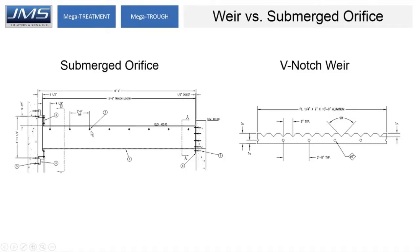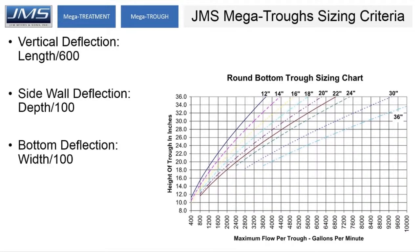Submerged orifices or V-notch weirs are typically used, and it's about five to ten percent cheaper to go with submerged orifices over V-notch weirs on a typical trough project. For typical sizing criteria, we use a chart showing maximum vertical sidewall and bottom deflection — at a given flow we determine the width and height, then design the shell thickness and external stiffeners as needed on a project-by-project basis.